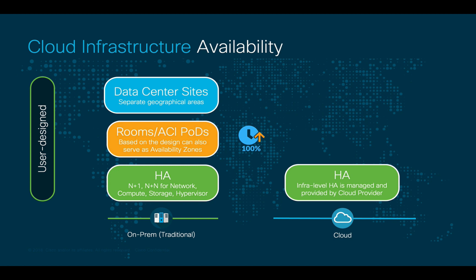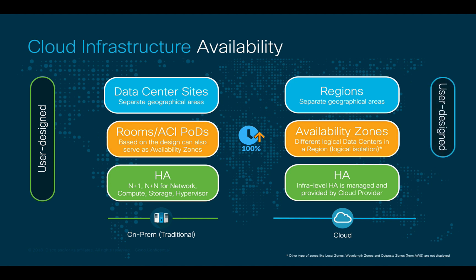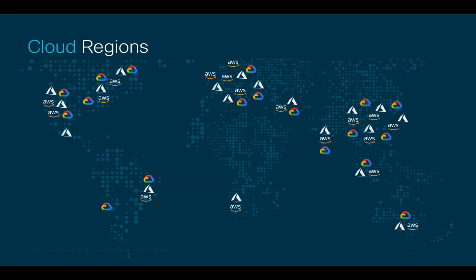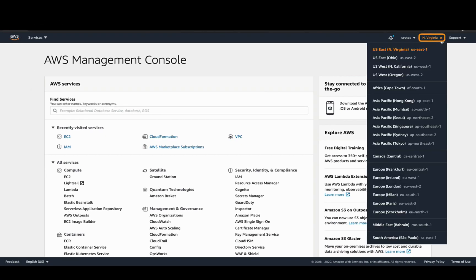Cloud providers have regions and availability zones to support this. Availability zones are logical data centers with separate power and networking resources, which can help minimizing disruption in a specific region. Still, just like with on-prem designs, natural disasters may happen. Therefore, you want to make sure that you also consider multiple regions as part of your overall plan. There are multiple regions available in each cloud provider. In the case of AWS, for example, you can see which region you're working on in the top right-hand side of the Amazon console.